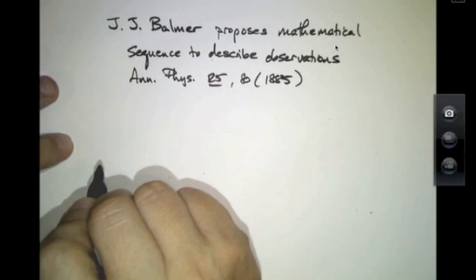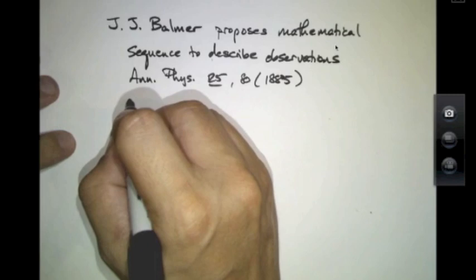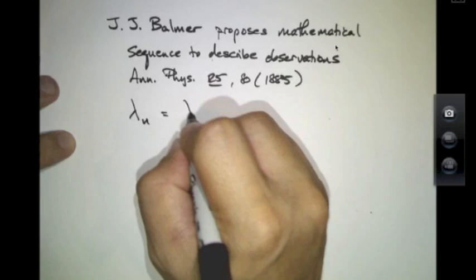Now, since Balmer was mostly aware of work being done in the visible portion of the spectrum because that was all done back in the 1880s, this sequence followed something like this.